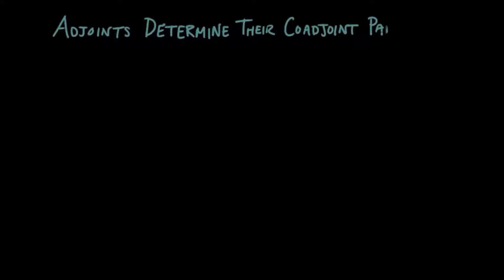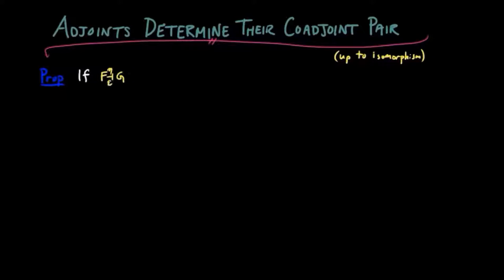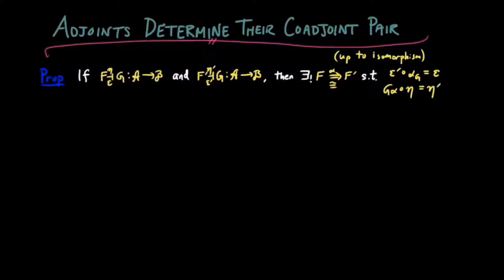Adjoints determine their coadjoint pair up to unique natural isomorphism. In other words, if f is left adjoint to g and f prime is left adjoint to g, then there exists a unique natural isomorphism alpha from f to f prime, such that epsilon prime alpha g equals epsilon and g alpha eta equals eta prime.